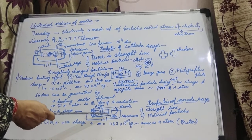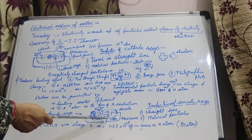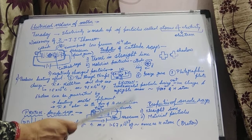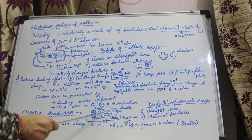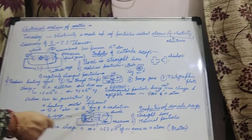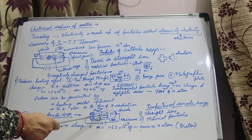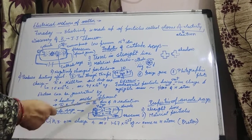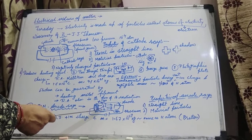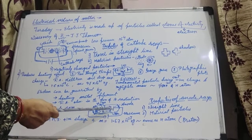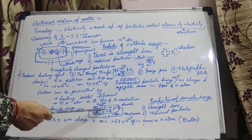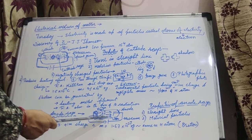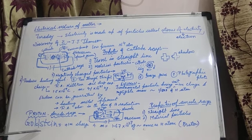Anode rays are generated when the electrons of the gas filled in the discharge tube are knocked off. When the electrons get knocked off, leaving behind positively charged particles, those positively charged particles start moving towards the cathode, and after passing through the perforations, they strike the walls of the discharge tube. Goldstein termed those radiations as anode rays and concluded that anode rays are made up of positively charged particles, which he named protons. So Goldstein discovered protons.